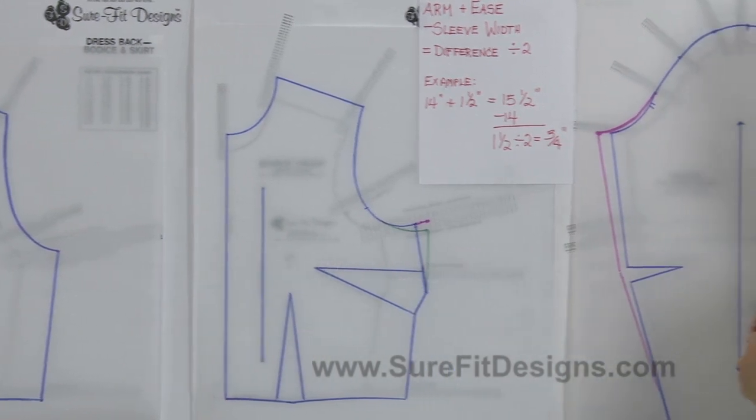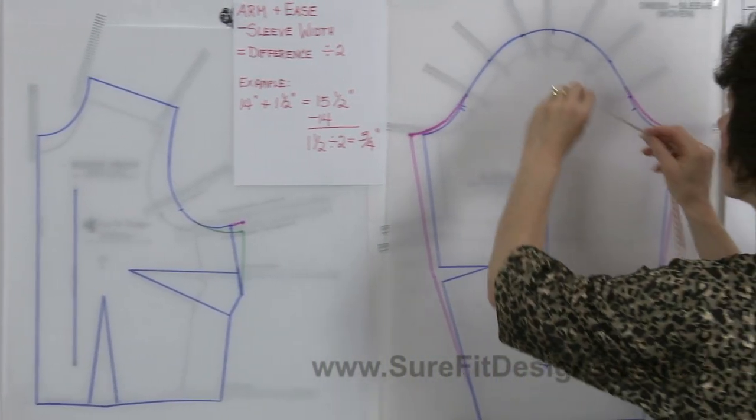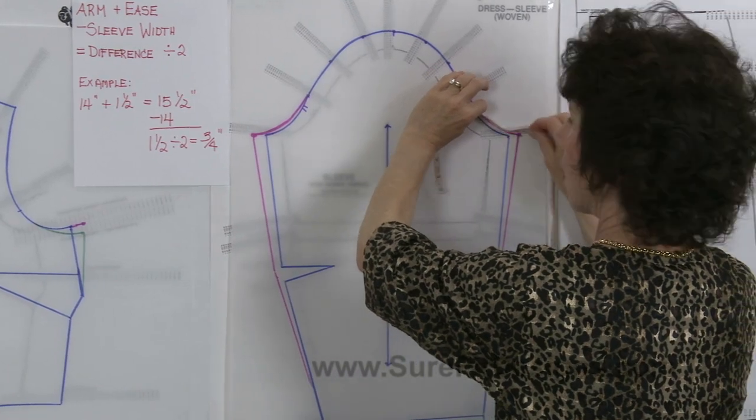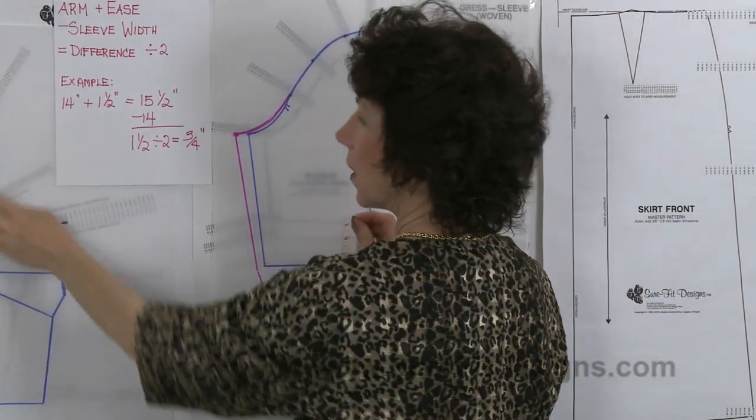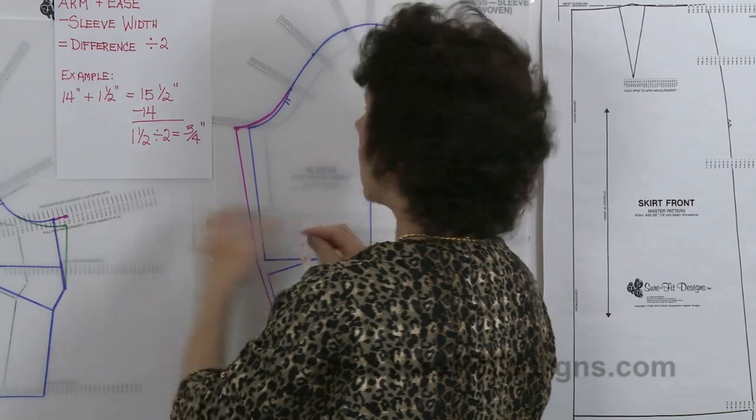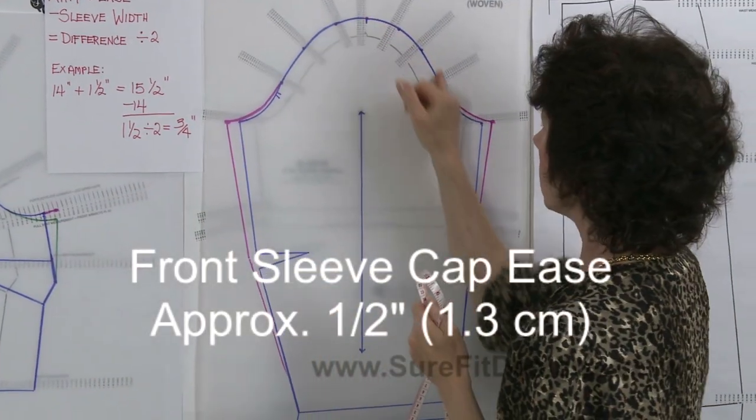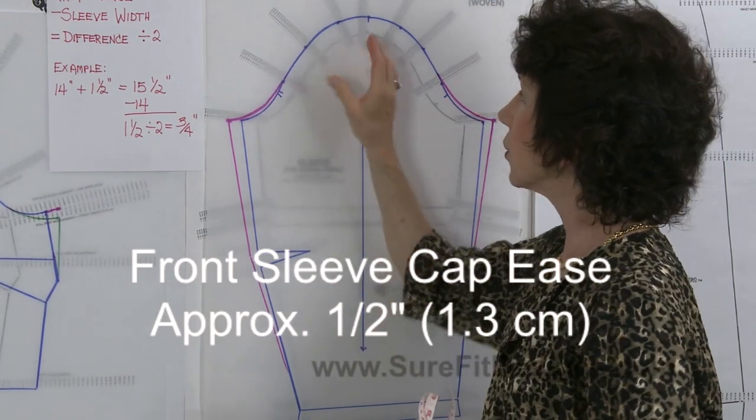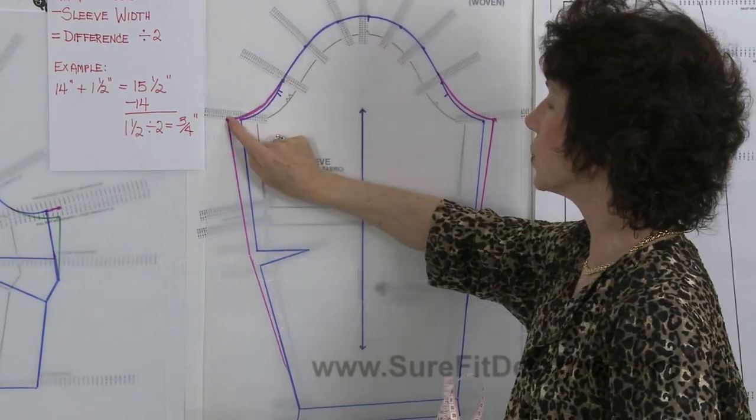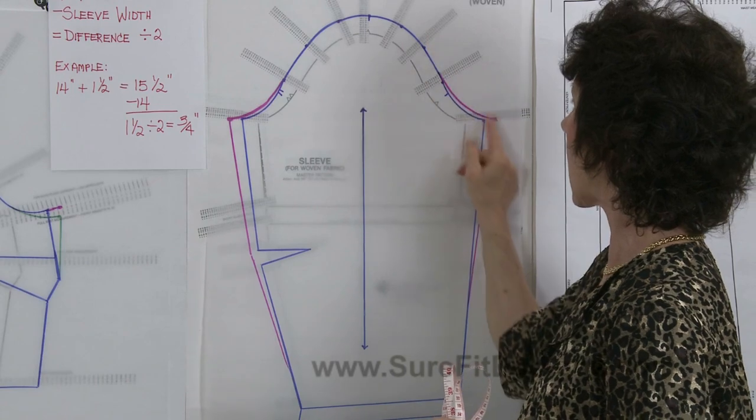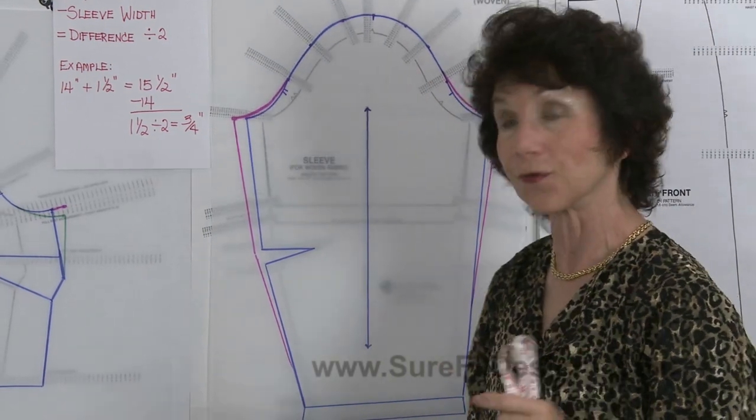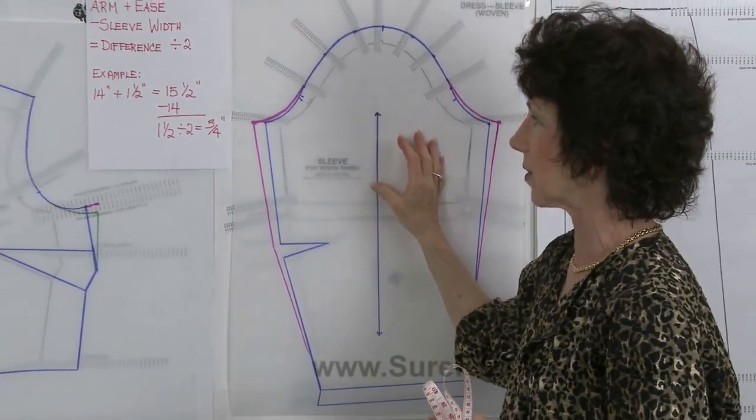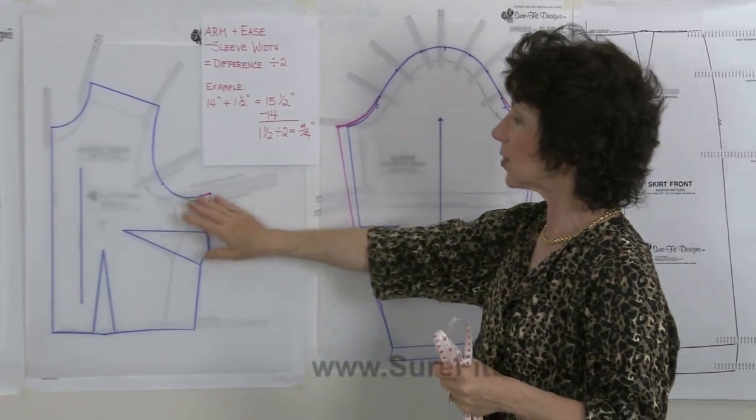Now on the front, when you measure from your sleeve cap notch to your underarm and compare that to the front arm side, this distance on your sleeve cap should be about a half an inch longer. So you're getting about five eighths of an inch of ease on the back and about a half an inch of ease on the front of the sleeve pattern.